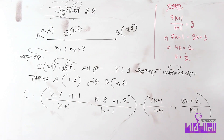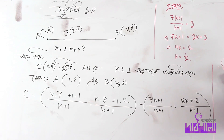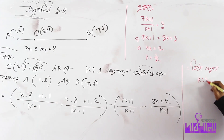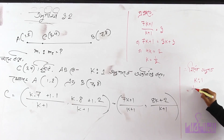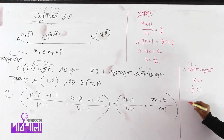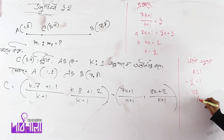If we have the problem with k and 1, then the problem is that k is to 1 equals 2. Then 1 by 2 is to 1. That means 1 is to 2. That is the answer.